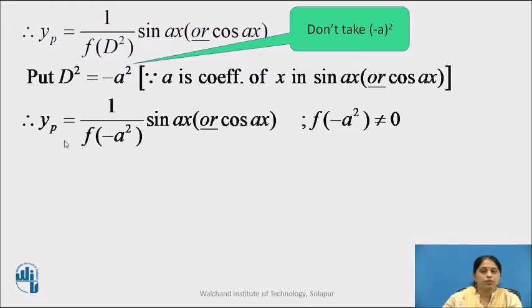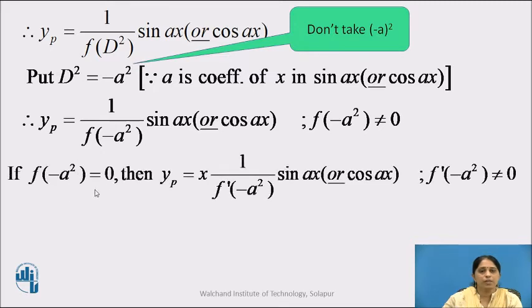Therefore yp = 1 upon f(−a²) into sin x or cos x, provided the denominator f(−a²) is not equal to zero. If the denominator is zero, then yp = x · 1 upon f′(−a²) into sin x or cos x — meaning we multiply yp by x and take the derivative of f(D) to get f′(D).